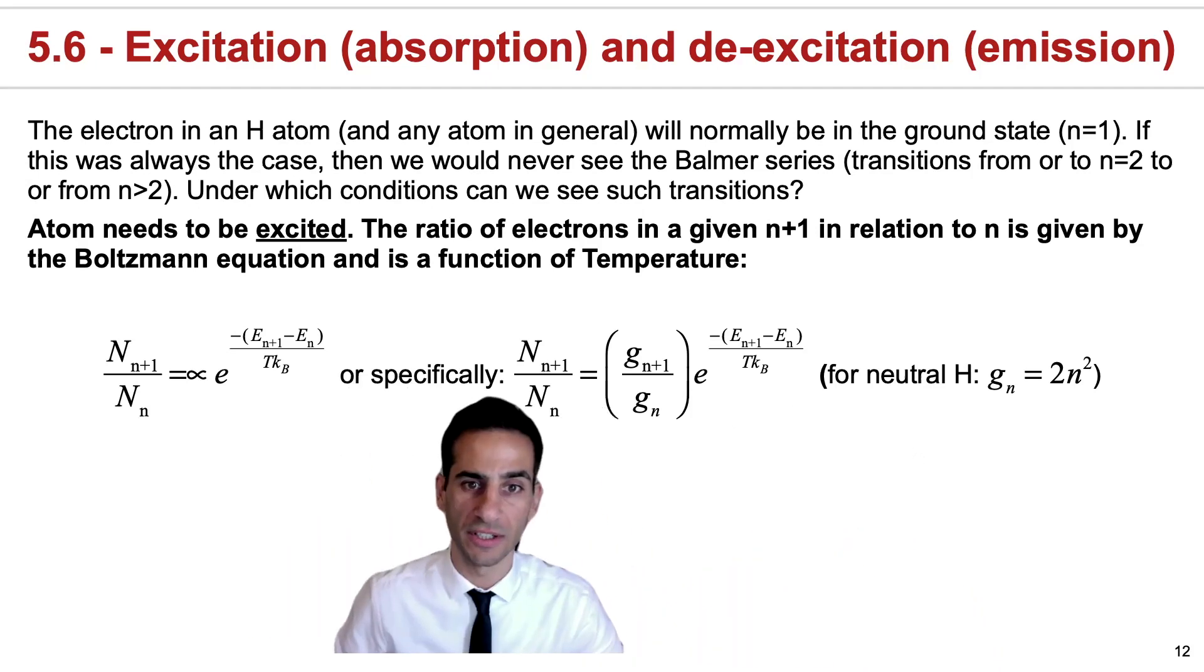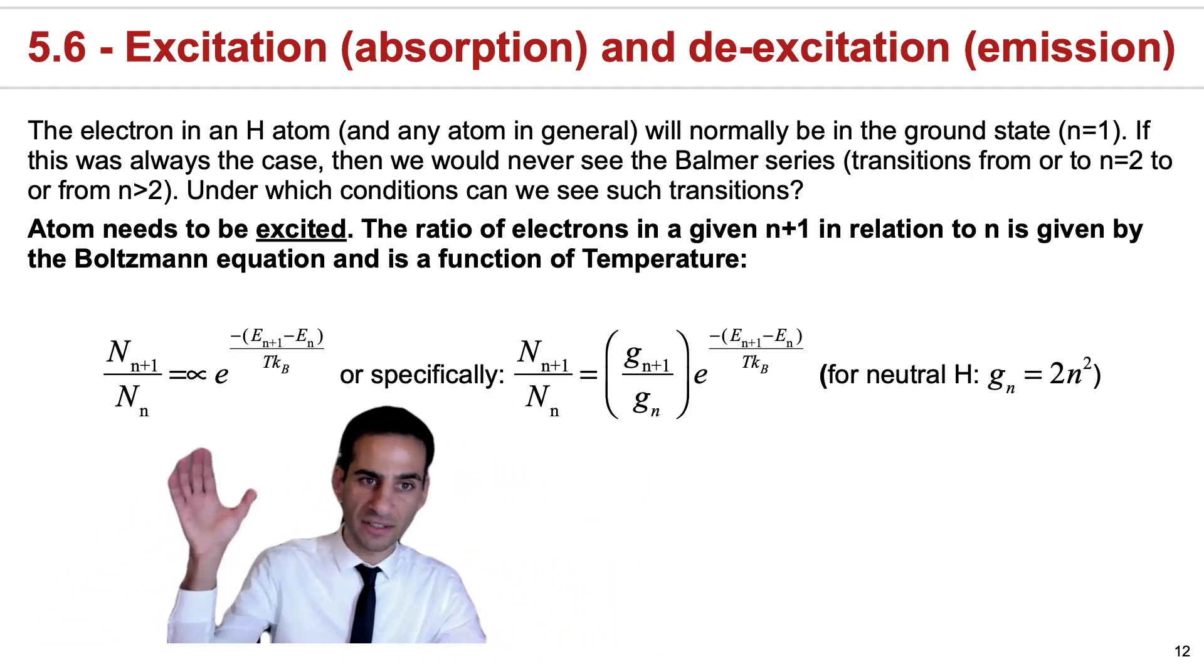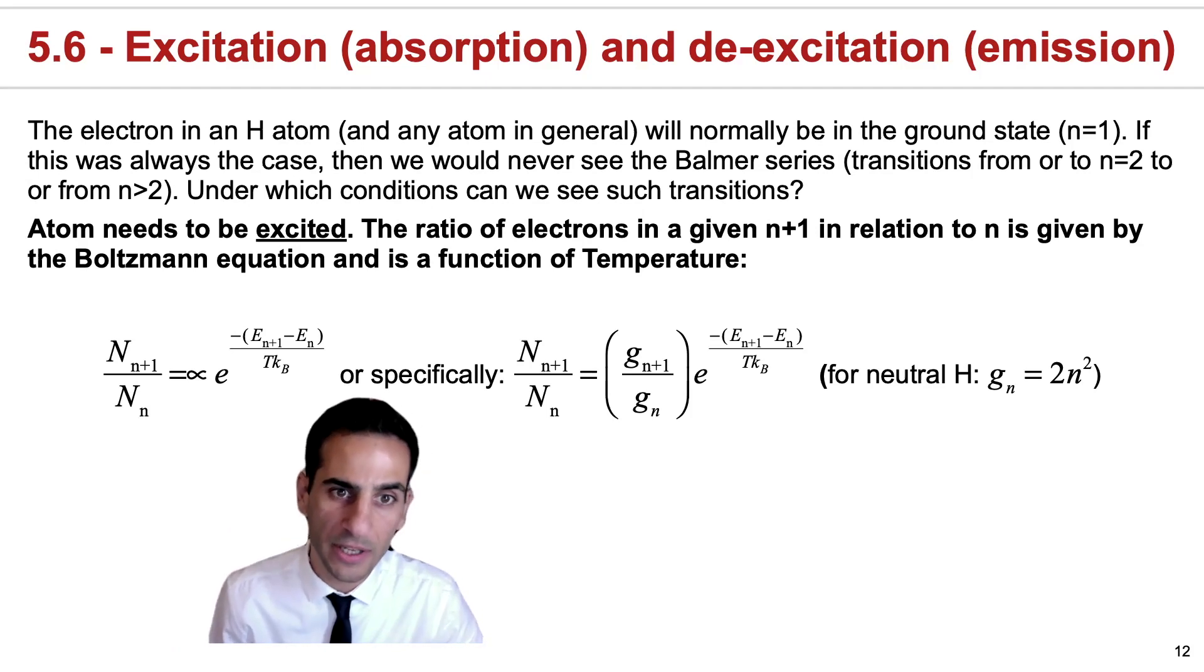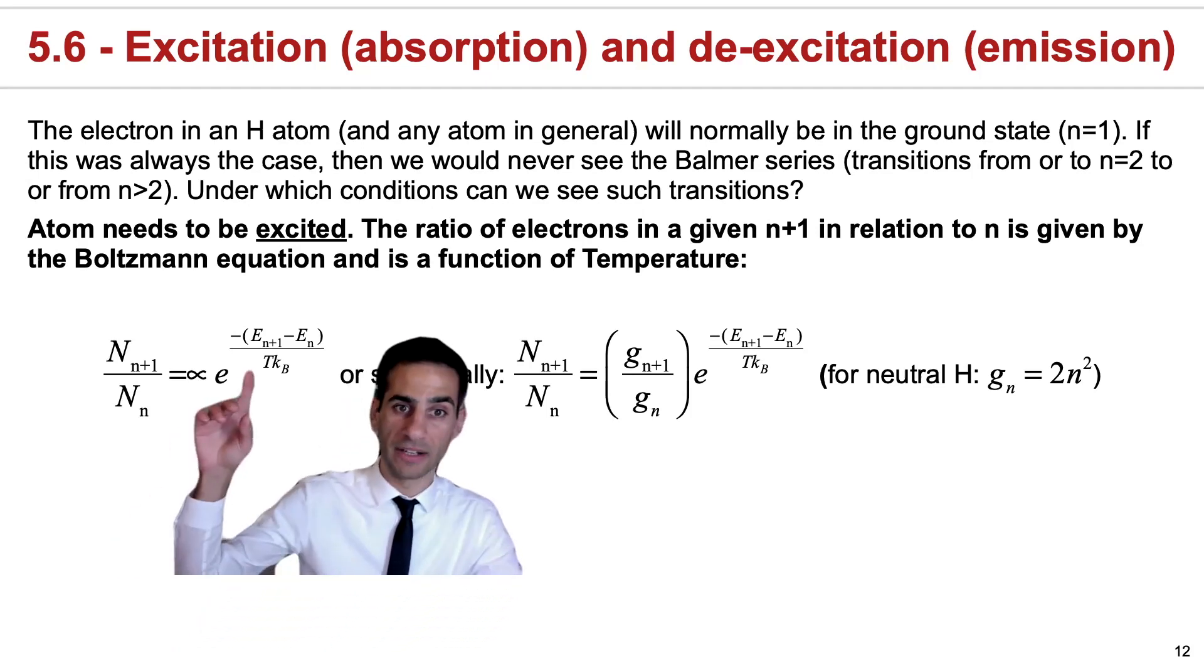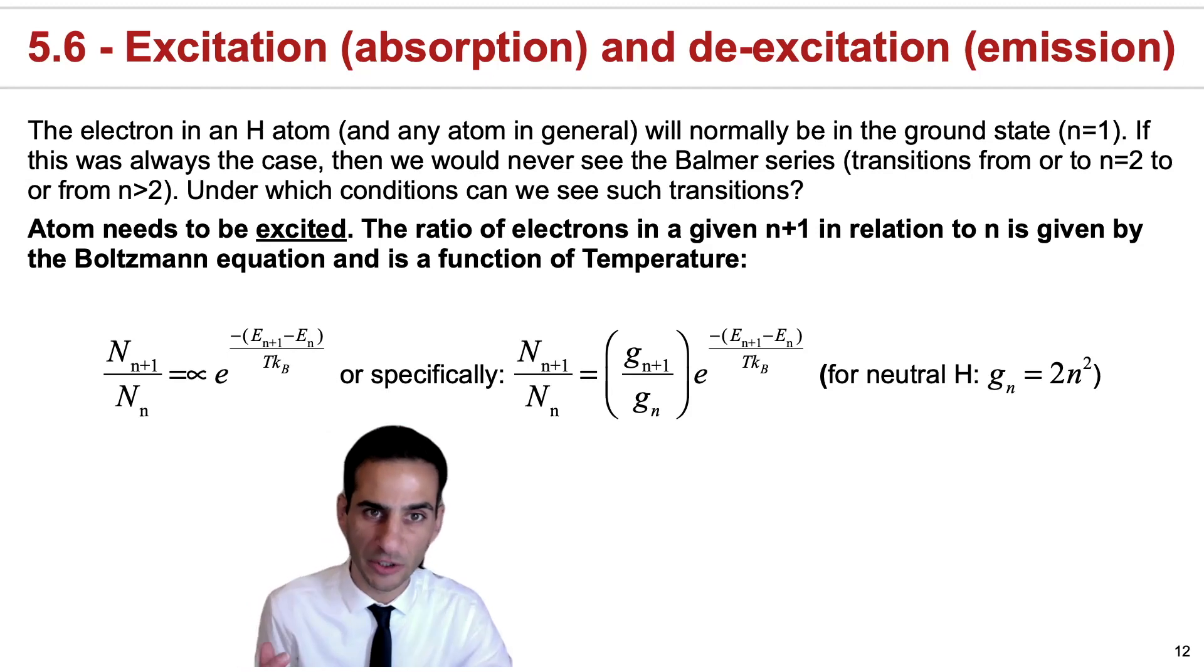Now, the Boltzmann equation will essentially depend on this exponential term. It also contains a minus that is important, and it's 1 over T. What this tells you is that temperature is the greatest predictor for an atom to be excited or to have its electrons at some n plus 1 level instead of n.